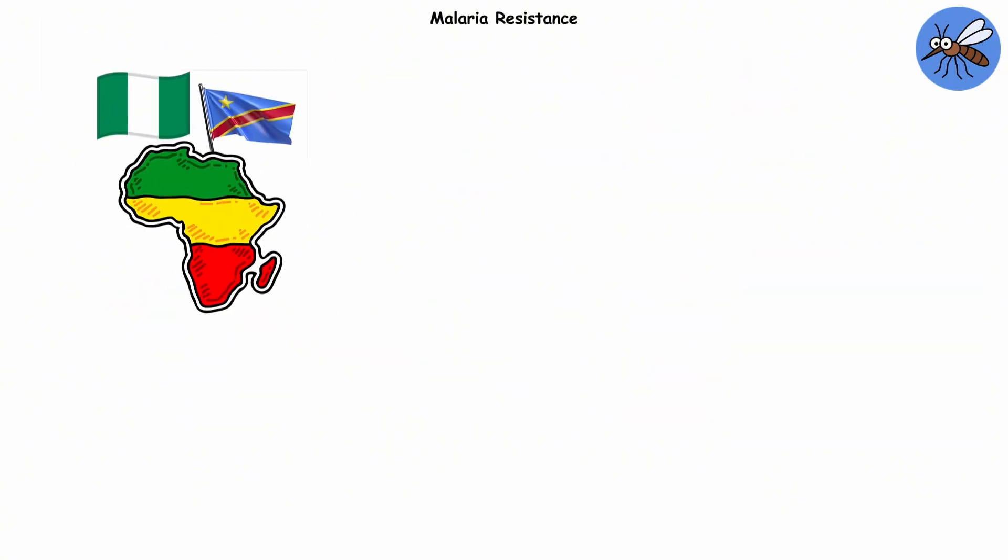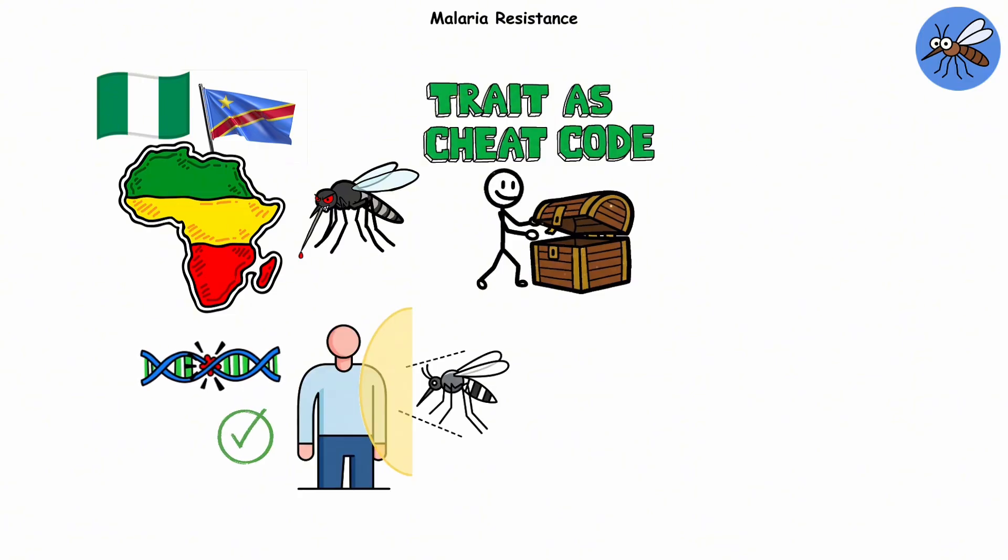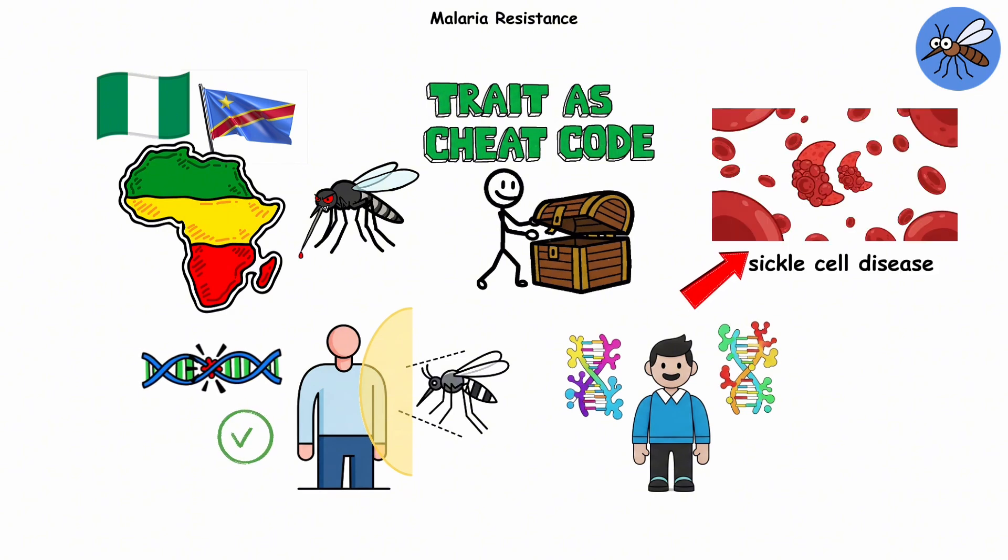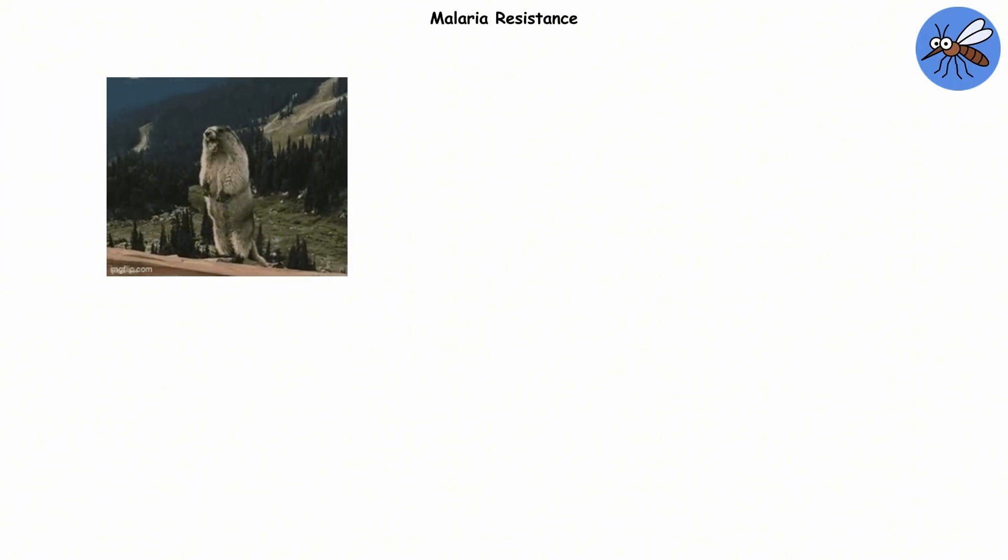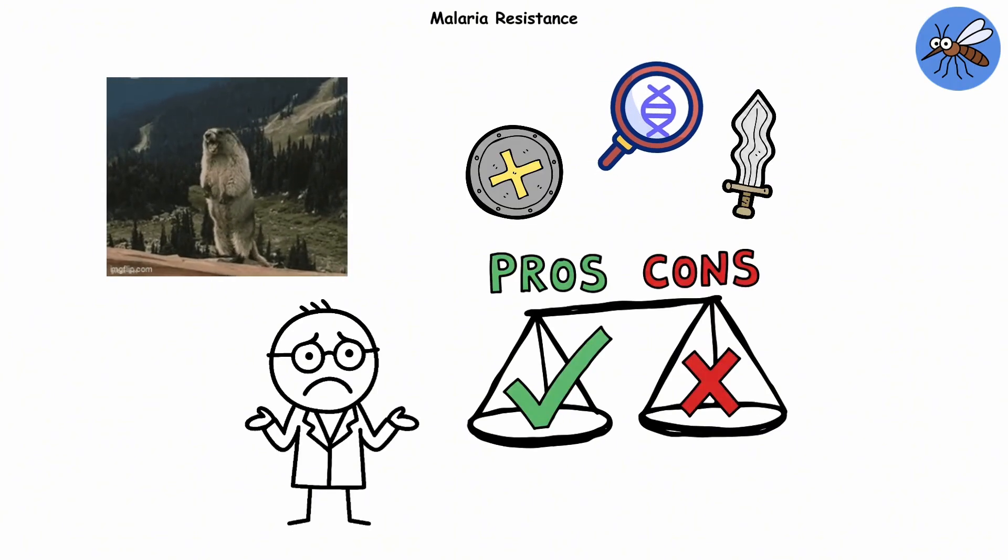In parts of Africa, where malaria hits hardest, this trait became a survival cheat code. People with one copy of the gene are much less likely to die from malaria. But if both copies of the gene are mutated, that's when it becomes sickle cell disease, which can be serious. It's a wild evolutionary trade-off. A gene that's both shield and sword. Protect you from one thing, harm you in another.